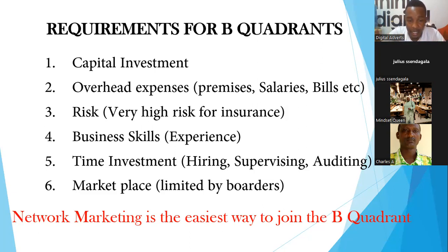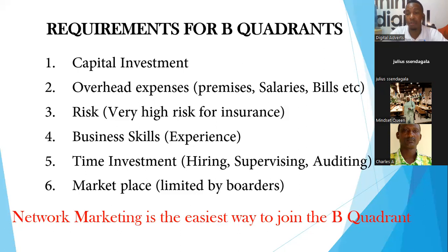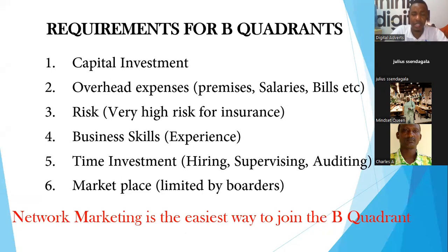Network marketing is the easiest way to tap into the B quadrant. You can benefit from all the benefits of becoming a business owner or investor using little capital — only 100,000. You don't need premises, you don't need an office, you can work from home or from the beach. The risk is very low — fire cannot break out and burn our applications. The only insurance needed is managed by the company. You can work in a borderless economy — Uganda, Kenya, Tanzania, Rwanda, Ethiopia, and more.